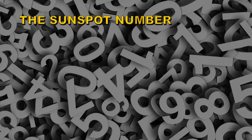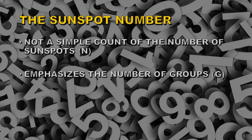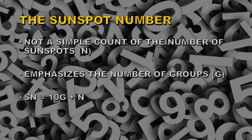One of the most common ways of keeping track of sunspots is to refer to the sunspot number. This is not simply a count of the number of sunspots on the Sun at any given time — let's call that number n — but it also takes into account the number of sunspot groups on the Sun at any given time, which we call G. The formula for the sunspot number is: ten times the number of groups plus the number of individual sunspots.